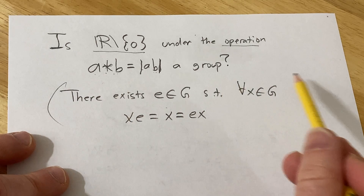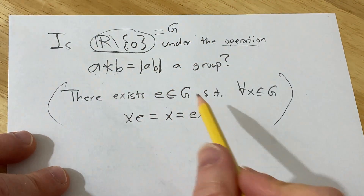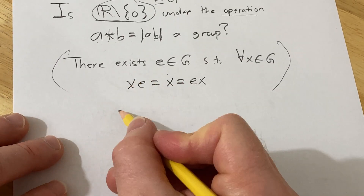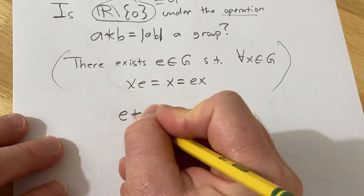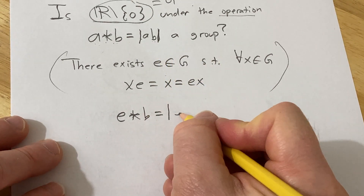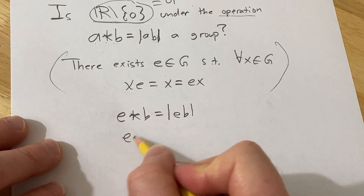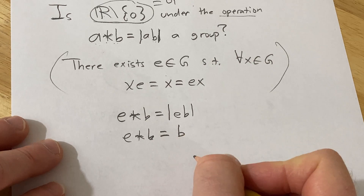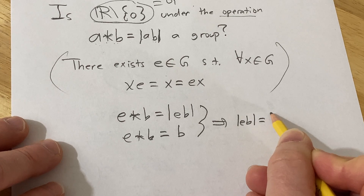In this case our group G is the non-zero reals, and I don't think there's going to be an identity element. If e were the identity, that would mean e star b equals the absolute value of eb, but at the same time e star b needs to equal b. So that implies the absolute value of eb equals b.